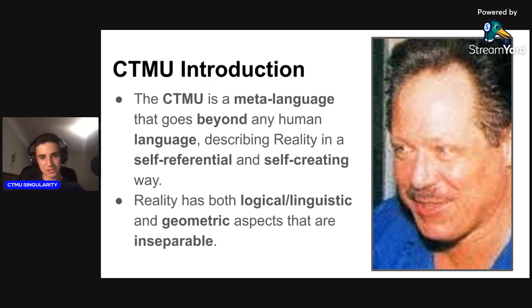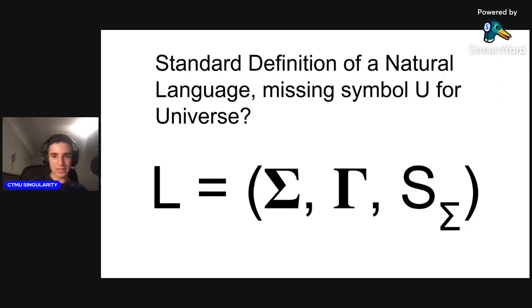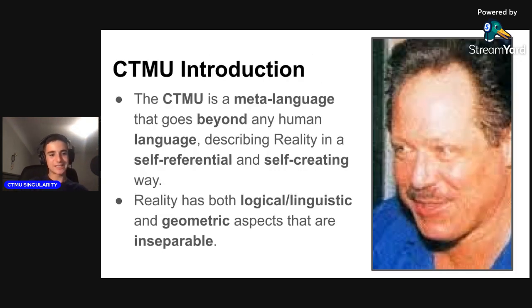Reality is thus called a self-process: a self-configuring, self-processing language (SCSPL) because it processes and configures the universe which instantiates and parses it. Even though all human languages are realms of the SCSPL language-model universe, the symbol for universe—until Langen—had been omitted from the formal definition of natural language.